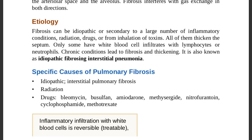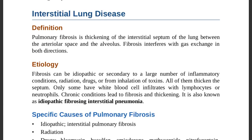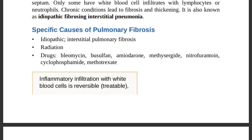Specific causes of pulmonary fibrosis include idiopathic causes, radiation history, and drugs such as bleomycin, busulfan, amiodarone, methysergide, nitrofurantoin, cyclophosphamide, and methotrexate. All of these are included in the specific causes of pulmonary fibrosis.